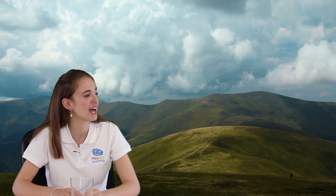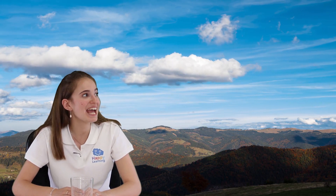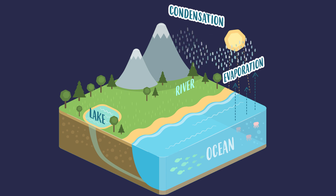Water vapor rises into the atmosphere and it cools. This is when the next phase in the water cycle arrives. Condensation is when water vapor cools and condenses, meaning that it goes back into liquid form, forming tiny little water droplets — thousands and thousands of them — forming clouds.